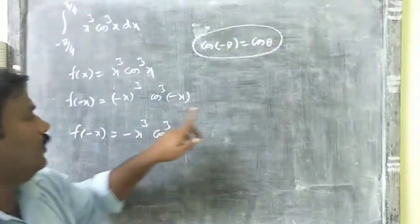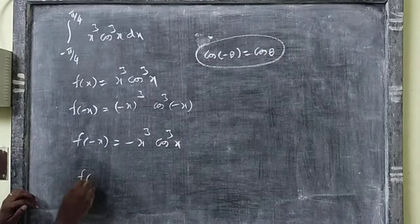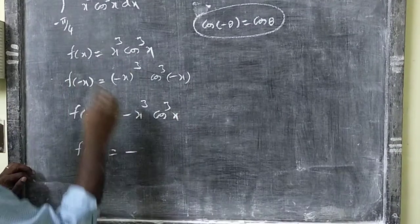Cos(-θ) is equal to cos(θ), so cos(-x) equals cos(x). Therefore, f(-x) is equal to minus x³ cos²x, which equals negative f(x).